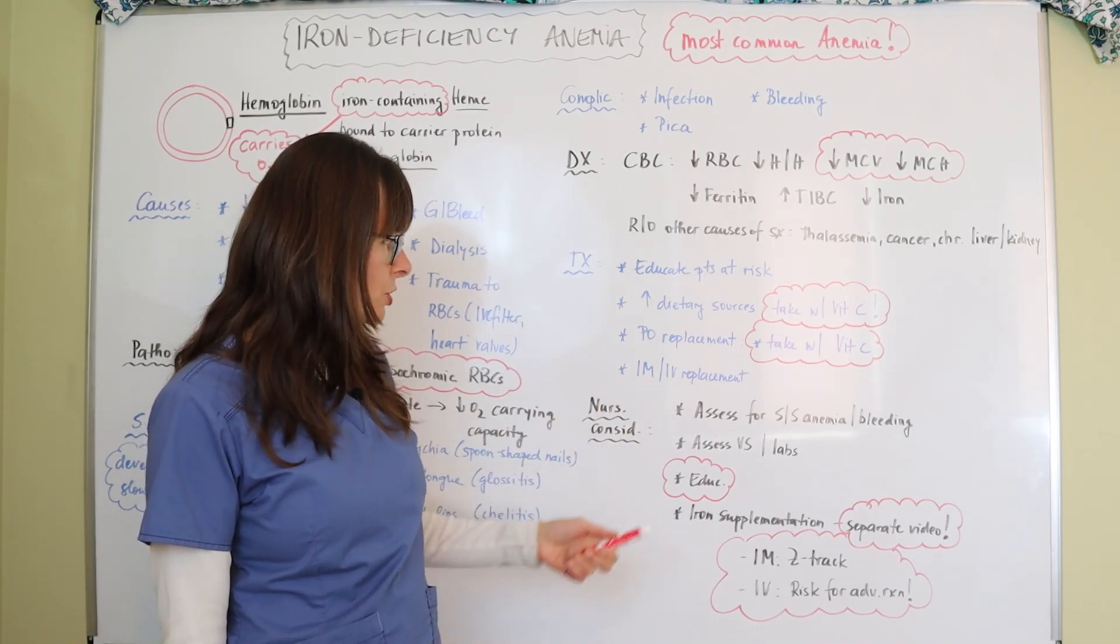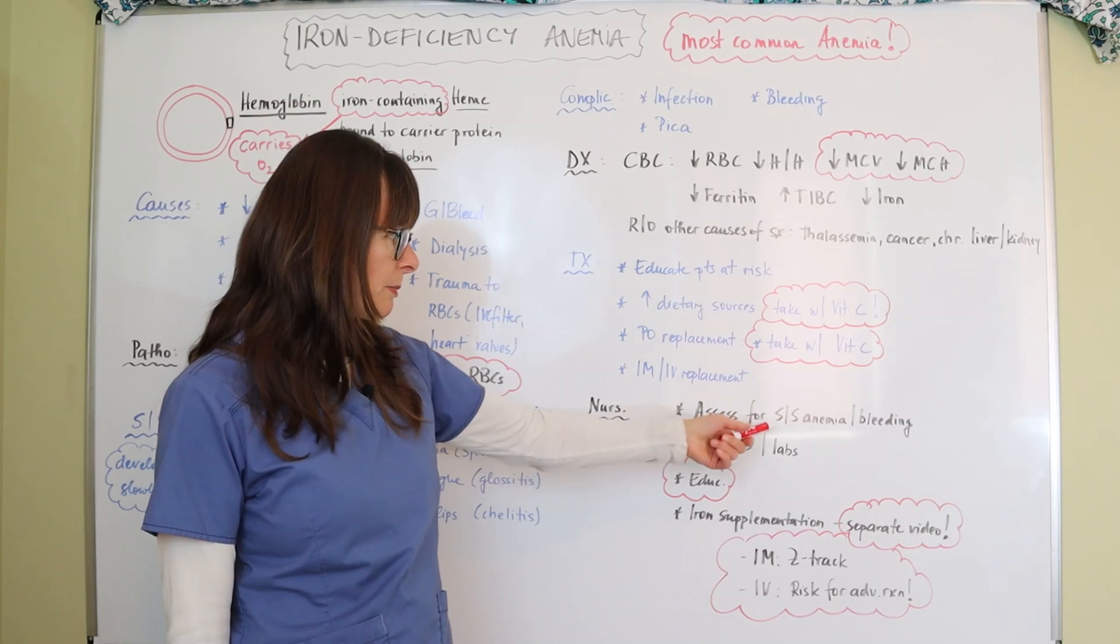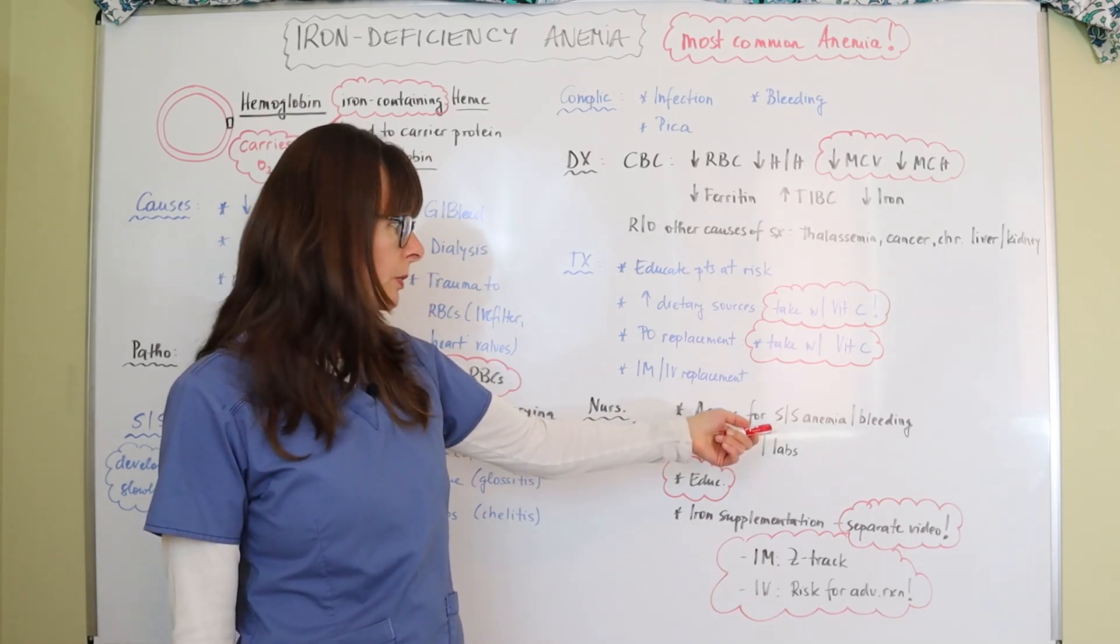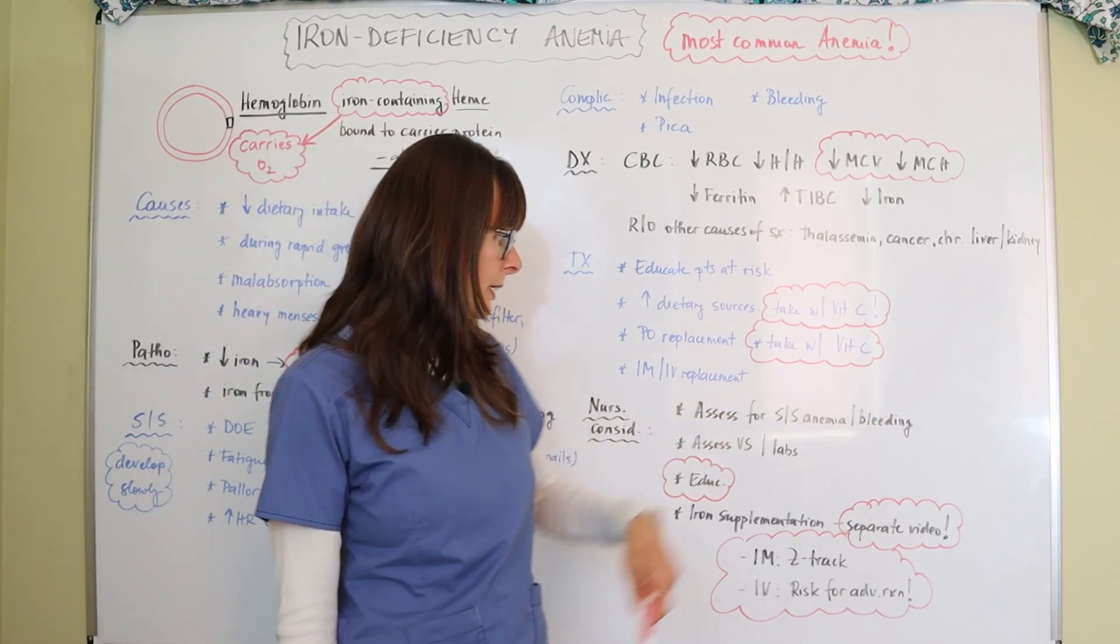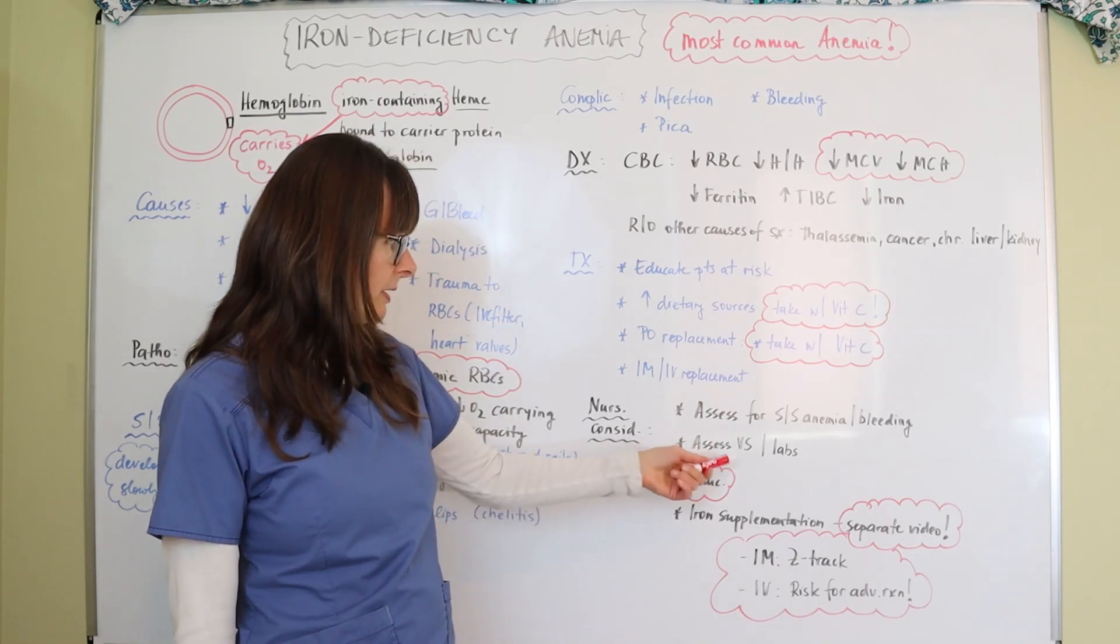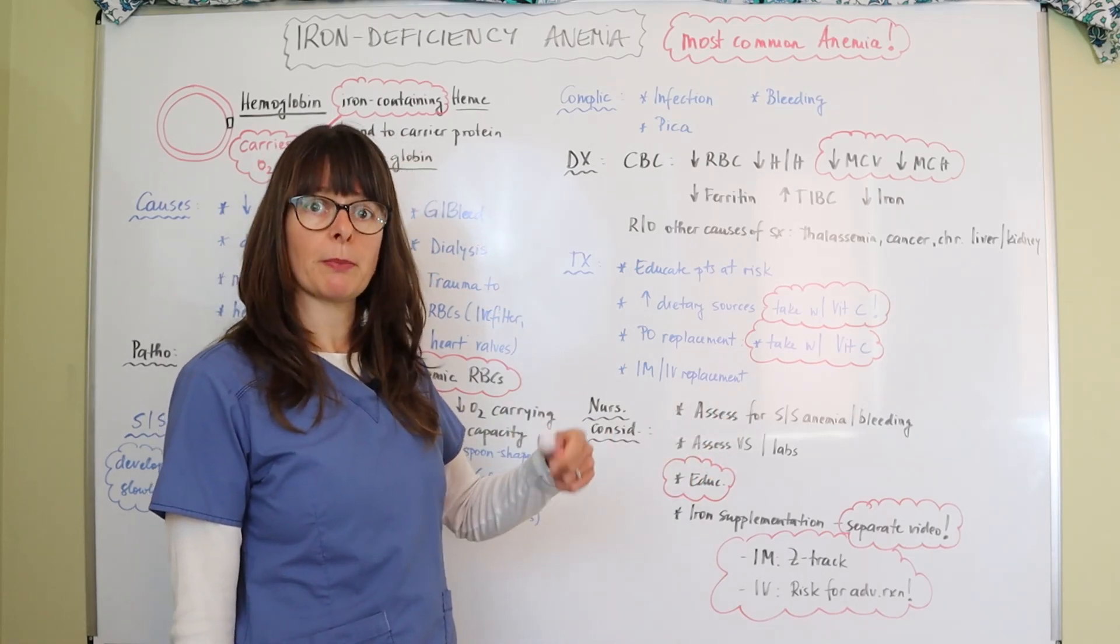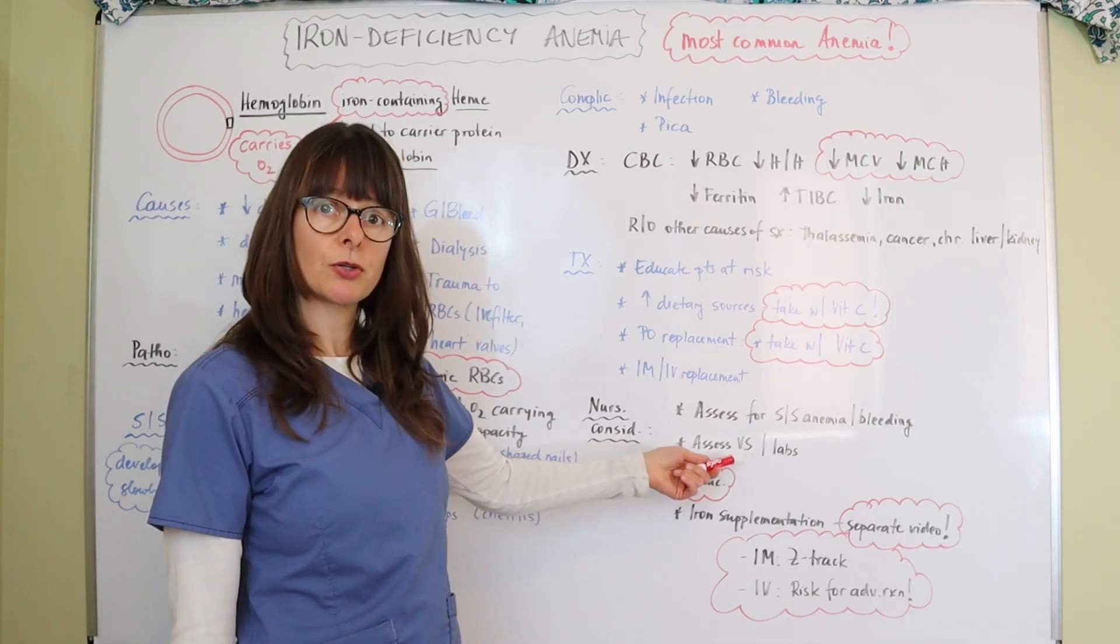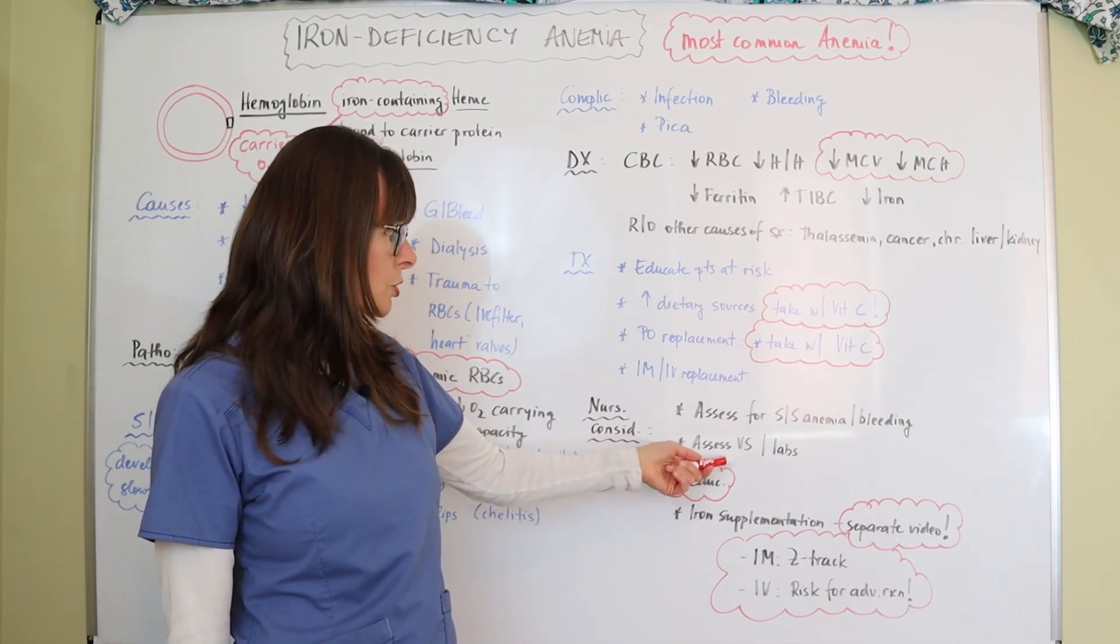For our nursing considerations we certainly need to assess the patients for all the signs and symptoms that we talked about including those of bleeding, and then assess their vital signs, heart rate, blood pressure, respiratory rate, because they might turn out to be hypovolemic as they are slowly bleeding from one or another source.